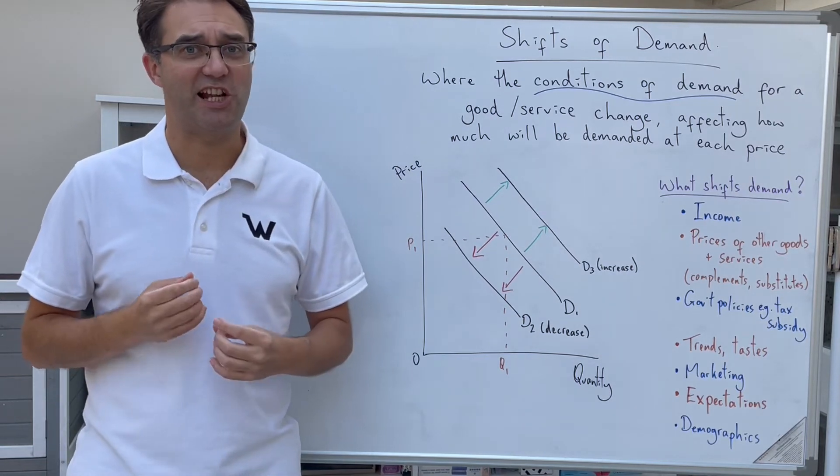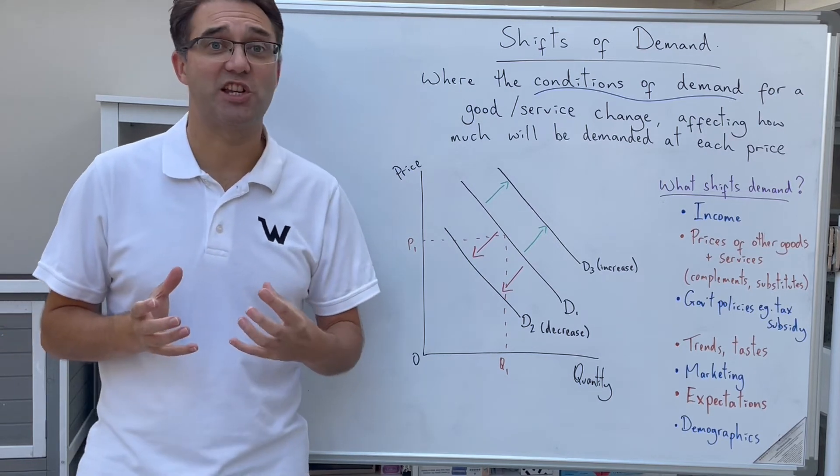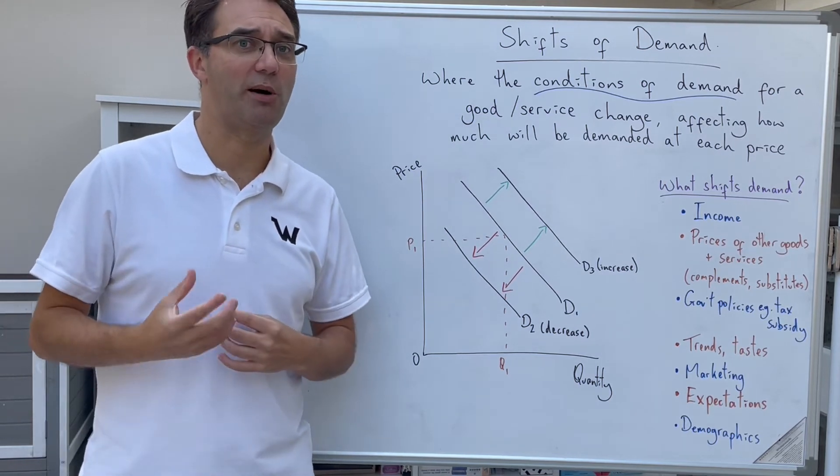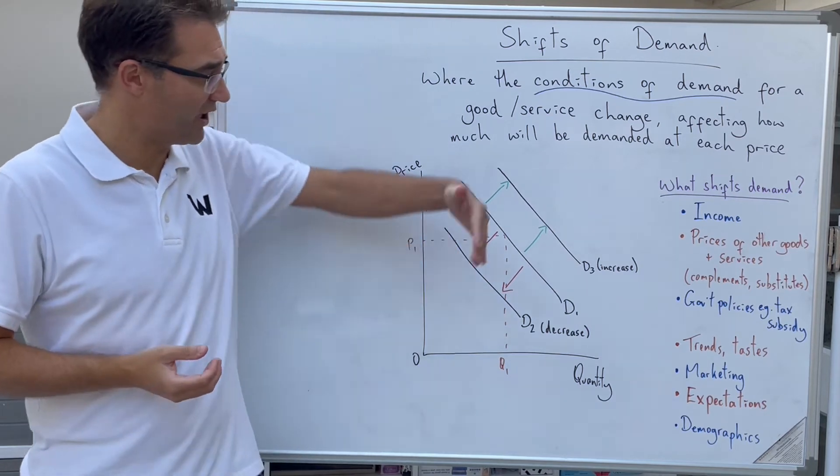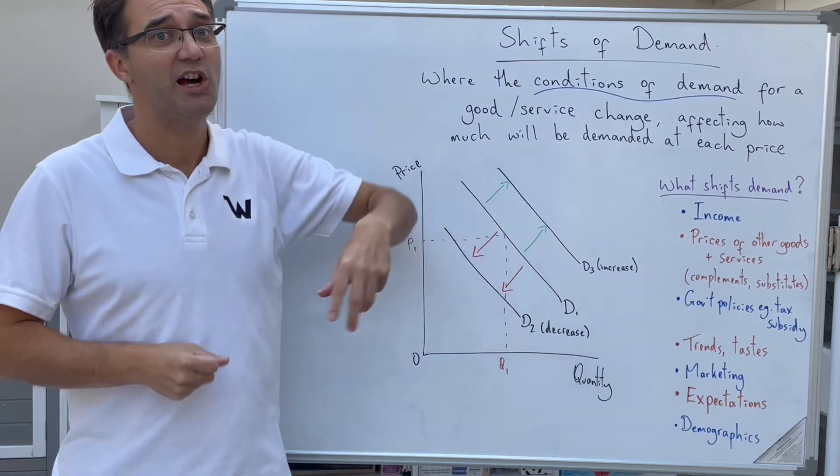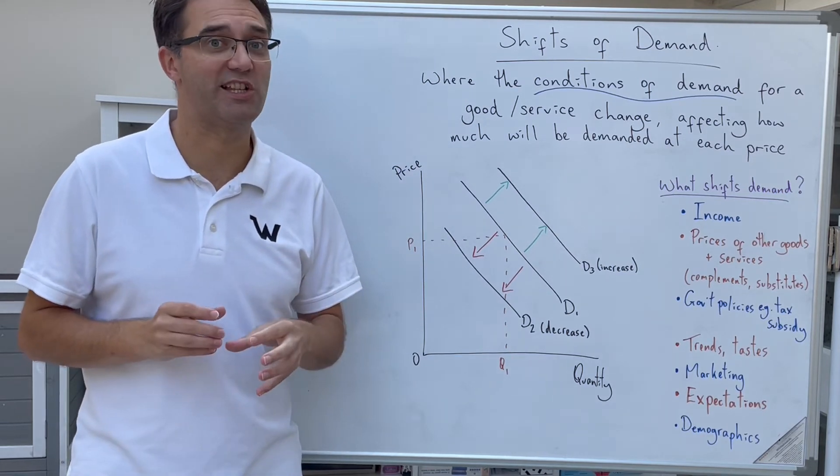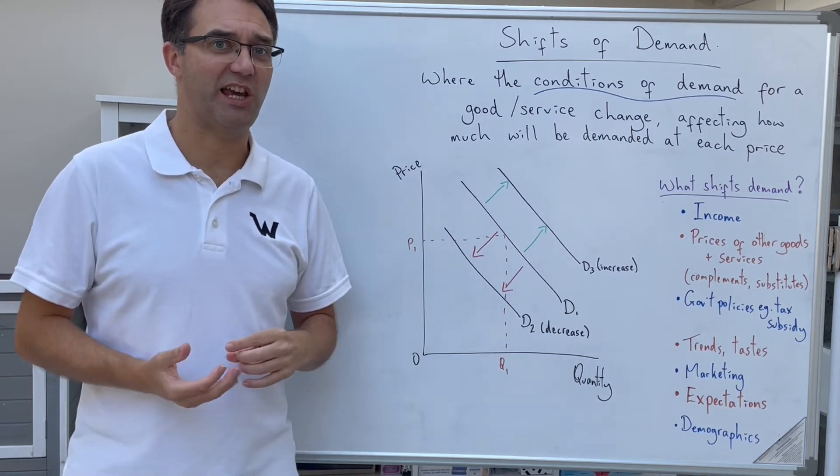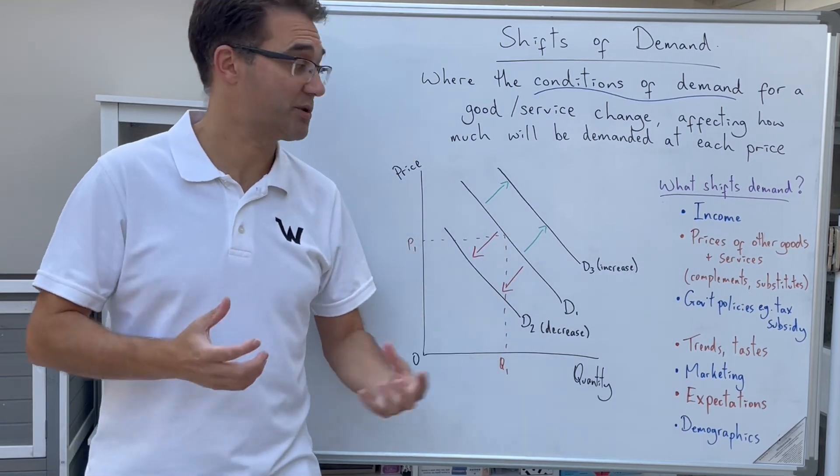If firms don't feel that their good is selling enough, then they can undertake what's known as marketing. That's a group of strategies designed to encourage people to buy more of a good or service. And that in itself, if it's successful, could shift the demand curve outwards. Unsuccessful, or if a competitor product has a successful marketing campaign, that might move the demand curve in for its rivals, for its substitutes.